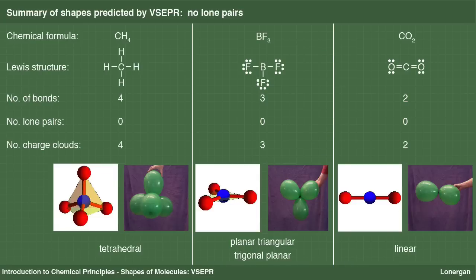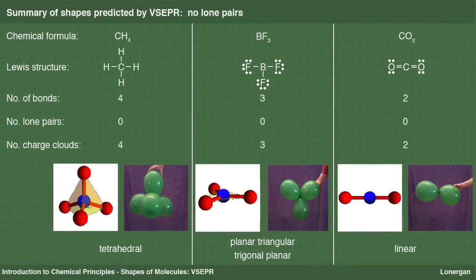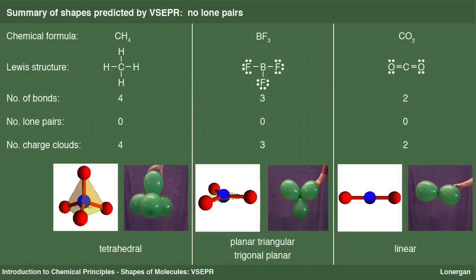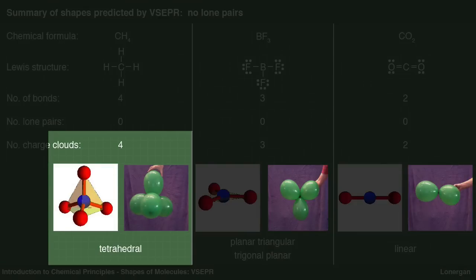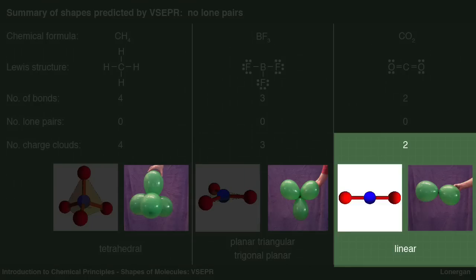We have now seen three possible molecular geometries and examples of molecules adopting those geometries. The central atom in each case has no lone pairs. This is not to say that there are no lone pairs in the entire Lewis structure — there are lone pairs in both boron trifluoride and carbon dioxide, but they are on the peripheral atoms, not the central atom. With no lone pairs, the number of charge clouds equals the number of bonds to other atoms. With four charge clouds, the geometry is tetrahedral; with three, trigonal planar or planar triangular; with two, linear.